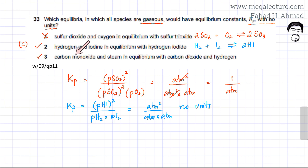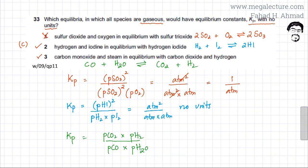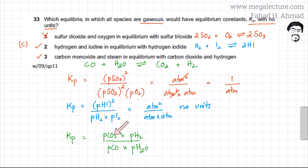Now for the third statement: carbon monoxide and steam in equilibrium with carbon dioxide and hydrogen. The equation is CO + H₂O ⇌ CO₂ + H₂. The Kp expression is: partial pressure of CO₂ multiplied by partial pressure of H₂, divided by partial pressure of CO and partial pressure of H₂O.